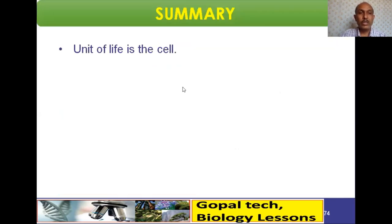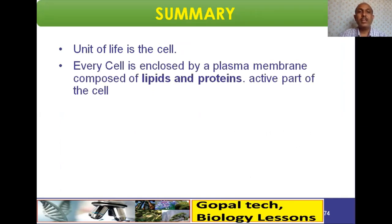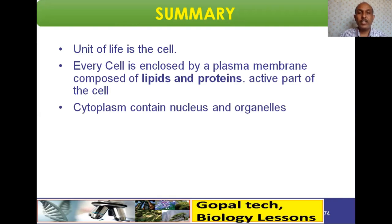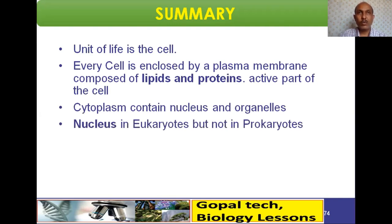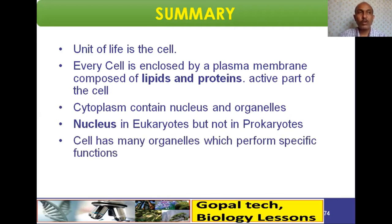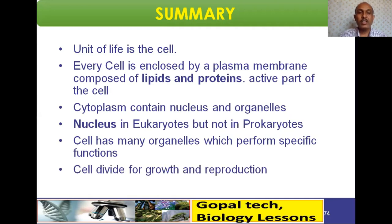In summary: a cell is the unit of life. Each cell is enclosed by a plasma membrane made up of lipids and proteins. The cytoplasm contains the nucleus and organelles. Plants, bacteria, and fungi also have a cell wall. Eukaryotes have a nucleus; prokaryotes do not. Cell organelles perform specific functions — mitochondria are the powerhouse, lysosomes are suicide bags — and cells divide by mitosis or meiosis for growth and reproduction.